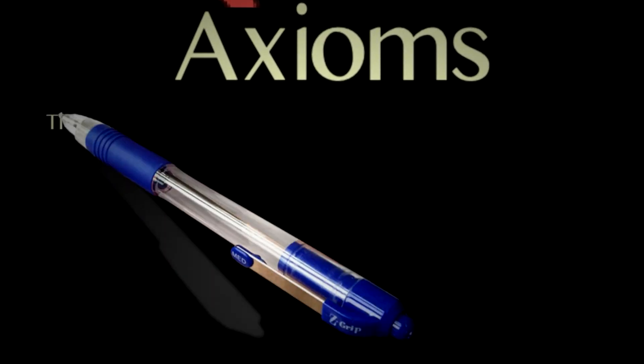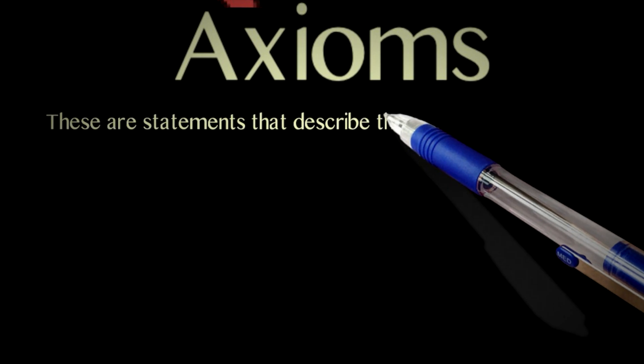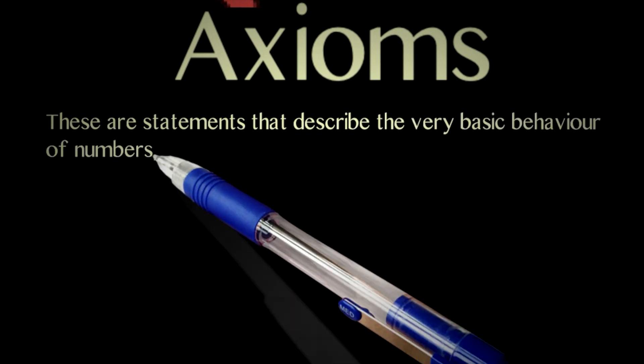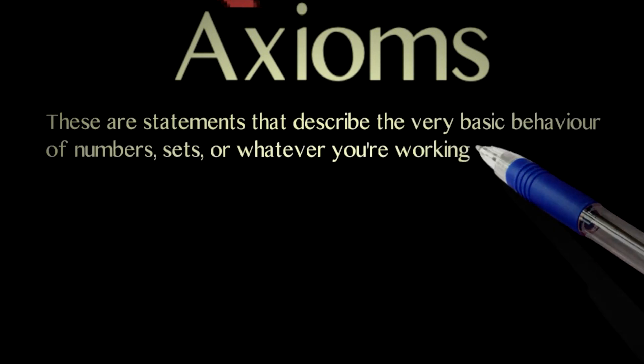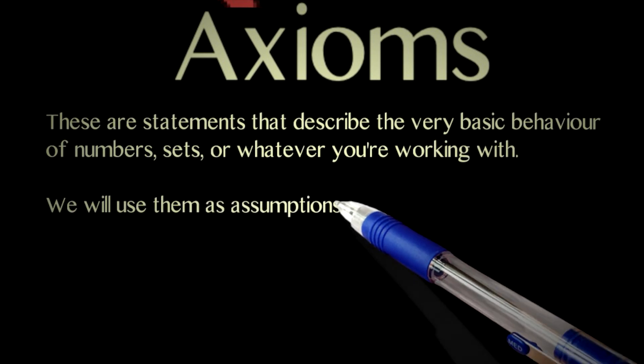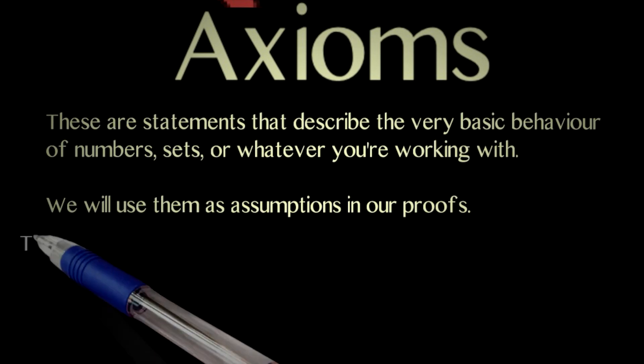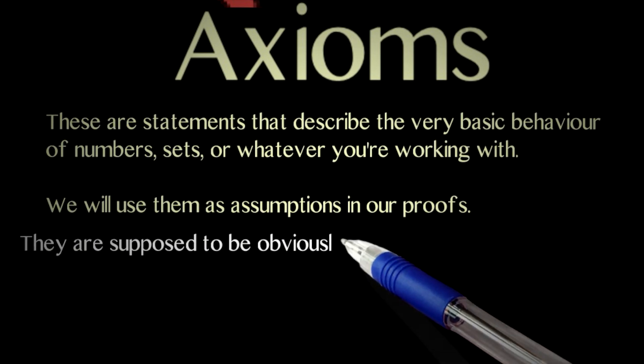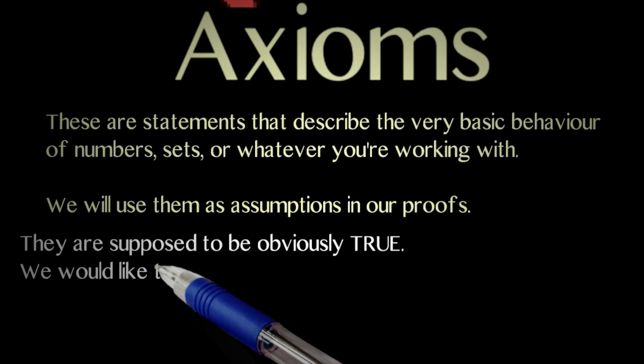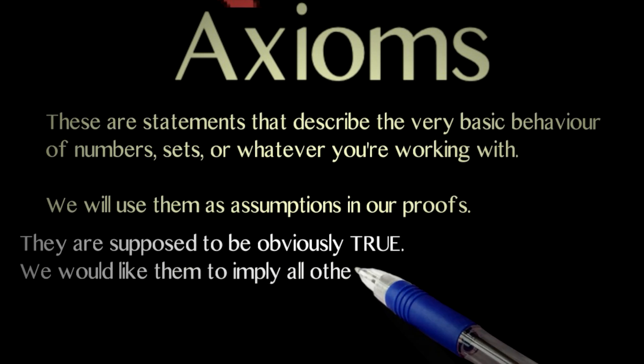Axioms. These are the statements that describe the very basic behavior of whatever you're working with: numbers, sets, groups, rings, whatever you're working with. The axioms don't need to be proved. They are used as basic assumptions within our proofs. If you're going to use them in our proof, they better be true. So, they better be obviously true. And hopefully, we'll have enough axioms to derive everything we want. As we'll see, this is too much to hope for.